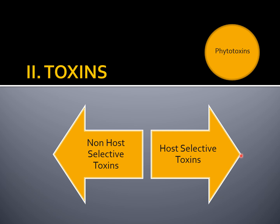Host selective toxins (HSTs) are those which affect only the host of that particular pathogen. For example, if Helminthosporium produces a host selective toxin, that toxin will affect only the host and not other species of plants. Another important characteristic of a host selective toxin is that it is essential for the development of the disease. We will be discussing each of these classes with a few important examples.